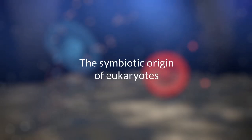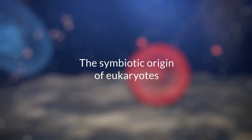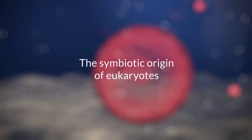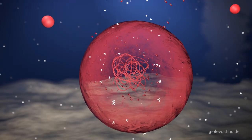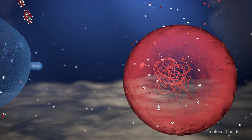This is a six-minute film about the origin of eukaryotes. Modern theories have it that eukaryotes arose from a symbiosis of two cells, an archaeal host here in red and a bacterial symbiont here in blue.